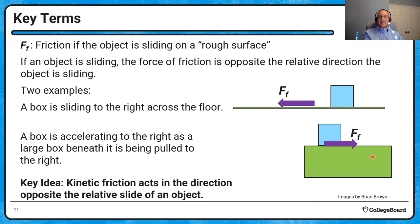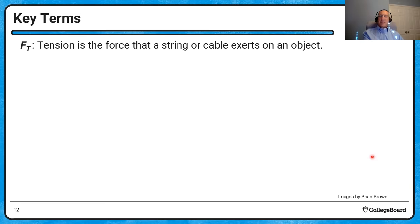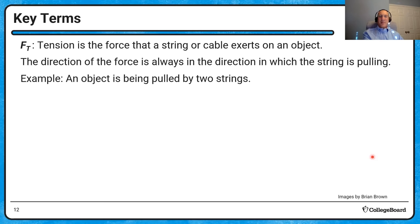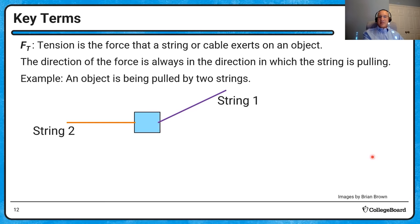Tension is an obvious force when it acts because there's going to be a string or cable. The force of tension always acts in the direction that the string is pulling. Strings can't push, so we don't worry about strings pushing an object. A box pulled by two strings in different directions would have two tension forces — one up to the right and one to the left.